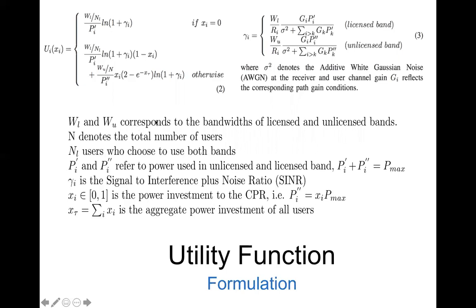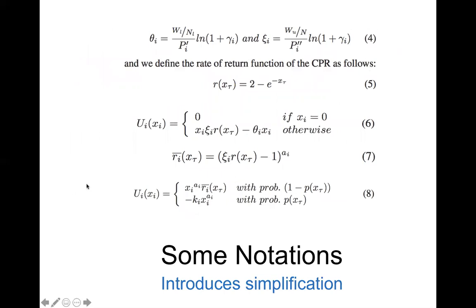The user utility function can be modeled using this formulation. W_L and W_U correspond to bandwidth of licensed and unlicensed channels. N denotes the total number of users. N_L represents the number of users who choose to use both bands. PI prime and PI double prime refer to licensed and unlicensed bandwidth power. Gamma_i is the signal-to-interference-plus-noise ratio, x_i is the power investment in the unlicensed band, and x_tau is the aggregate power investment of all users in the unlicensed bandwidth. Using these notations, we can simplify the utility functions, where R(x_t) is the rate of return function representing the gain term, and the loss term is subtracted.